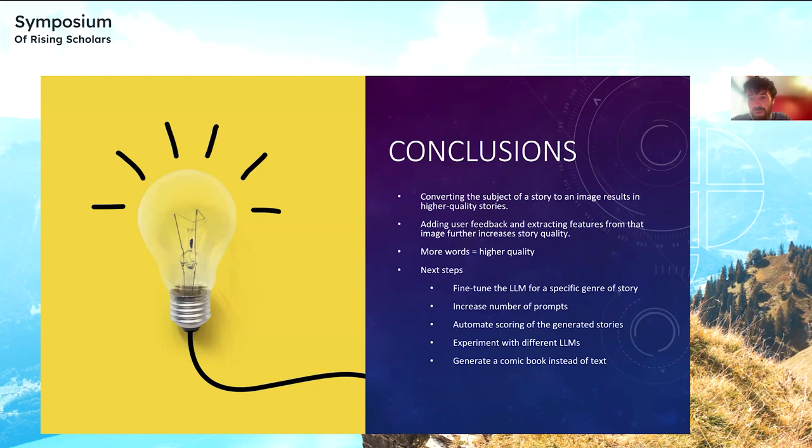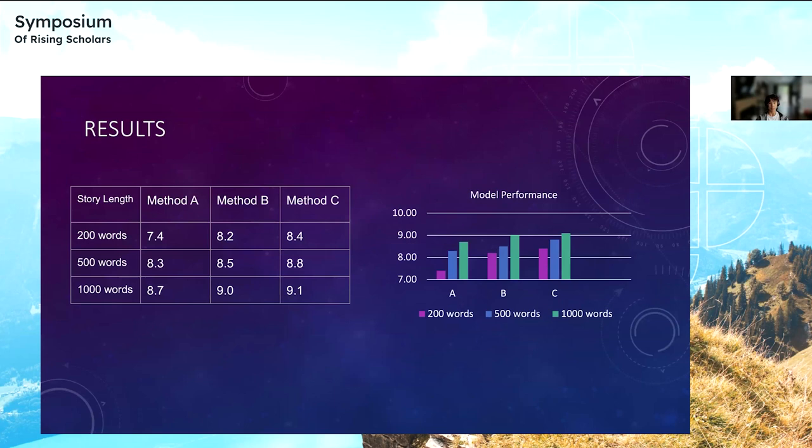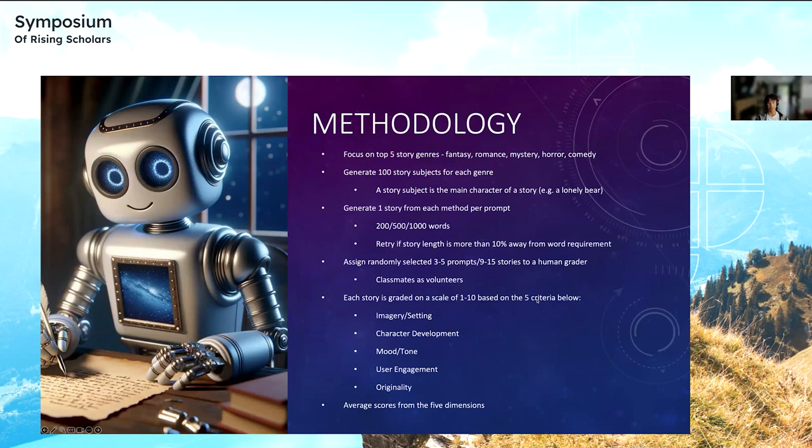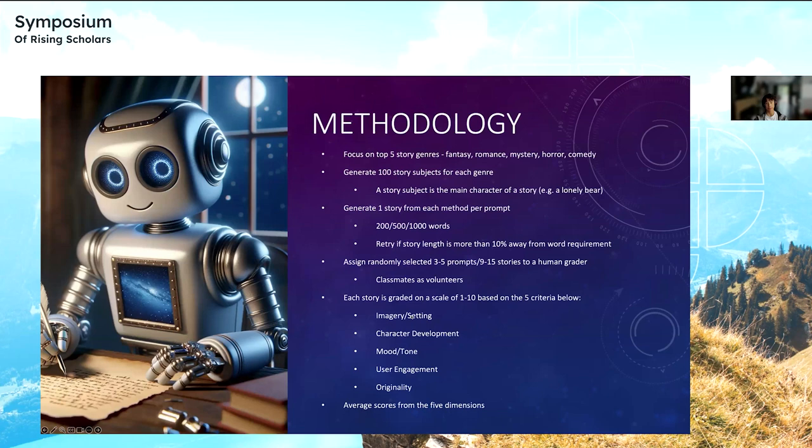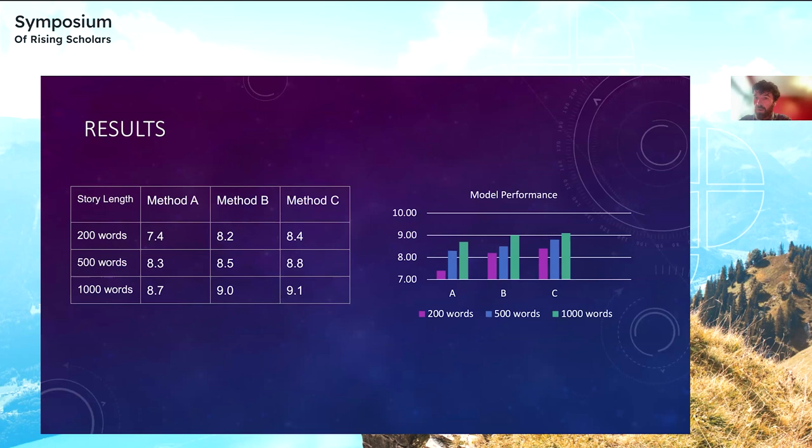I have a question too, Felix. Do you mind going back in the slides to your results page? Right here, I'm looking at 7.4, 8.3, 8.7. Can you just clarify for me and for the audience what the label of that axis is? What are we looking at? What are the units here? As I mentioned before in my methodology, each story is graded on a scale of one through 10, based on the five criteria below all of these, and then you just average them out. That means for these scores, let's say method A in 200 words, it means that on average, method A got a score of 7.4 in terms of its imagery and setting, character development, mood and tone, user engagement, and originality. And these are all from your volunteer graders, your classmates? Yes, these are from my classmates. Absolutely amazing, Felix.